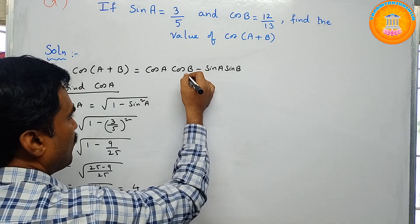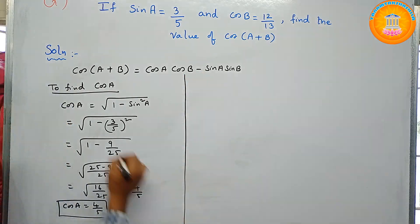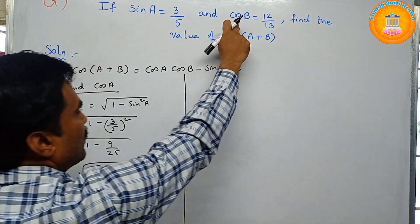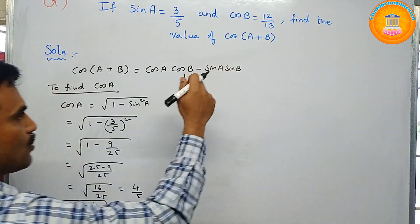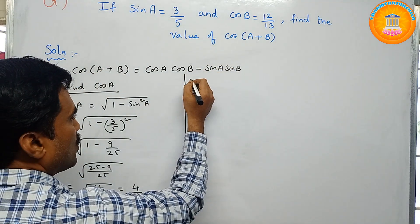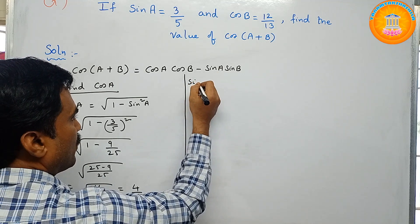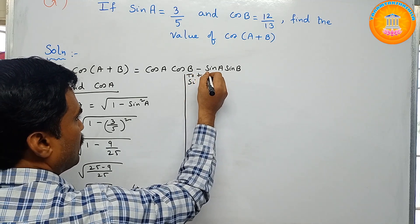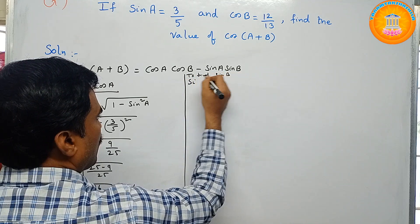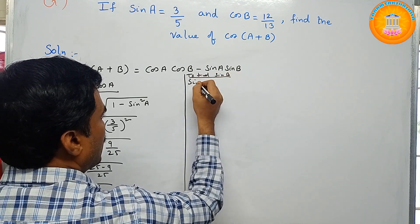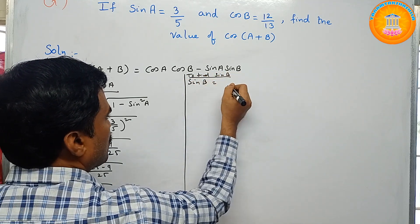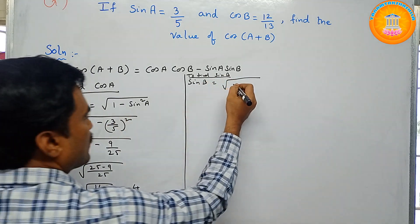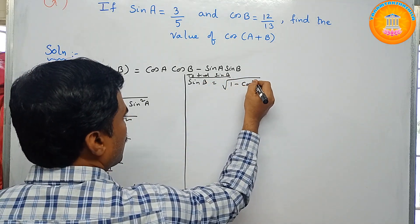Next, we need to find the value of sin b, because they have given cos b. So sin b equals the square root of 1 minus cos squared b.